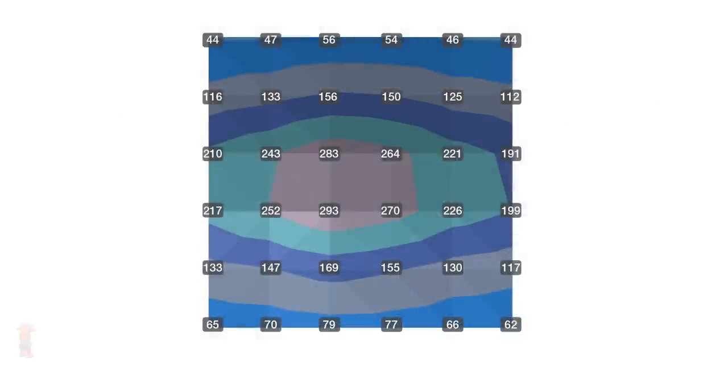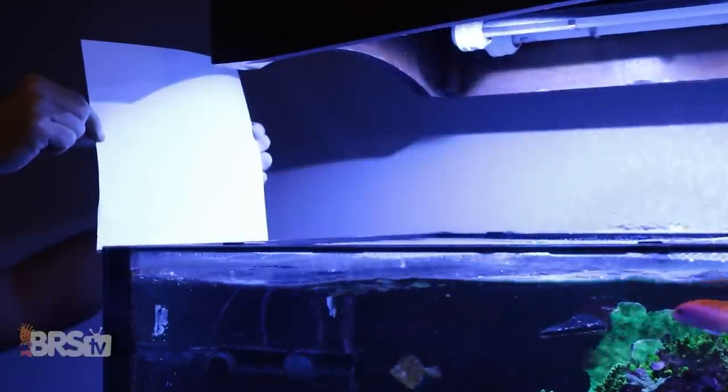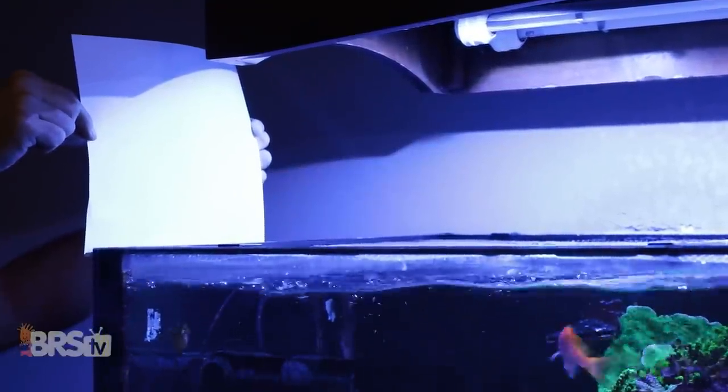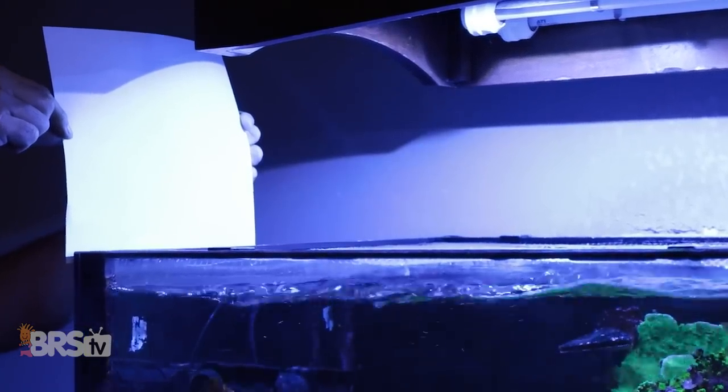There is a stopping point to this test, and that's when we see the total average PAR across all 36 points fall below 15% of the starting point, meaning that 15% or more of the light output is lost to efficiency and related light spilling out of the testing area and into the room.